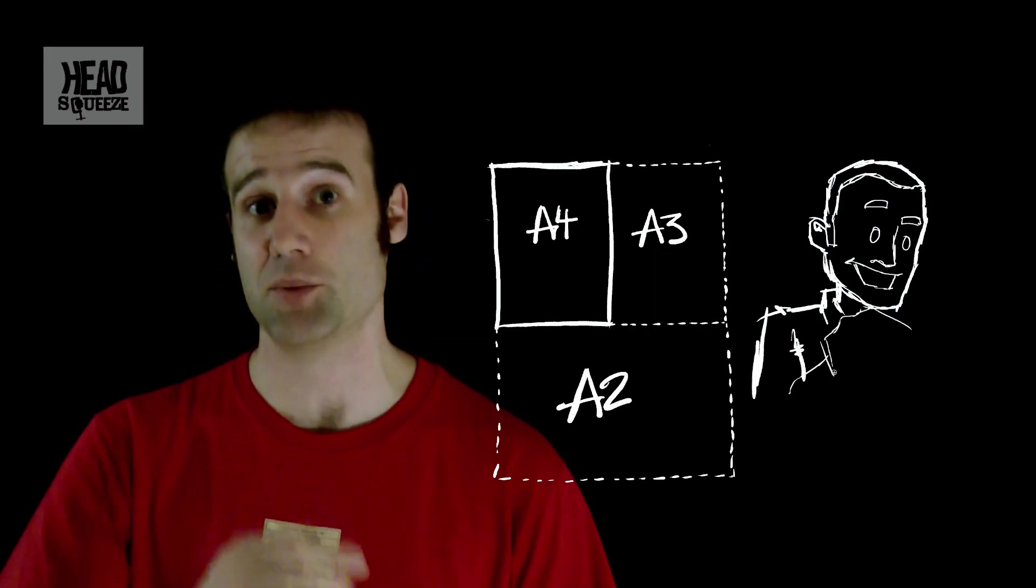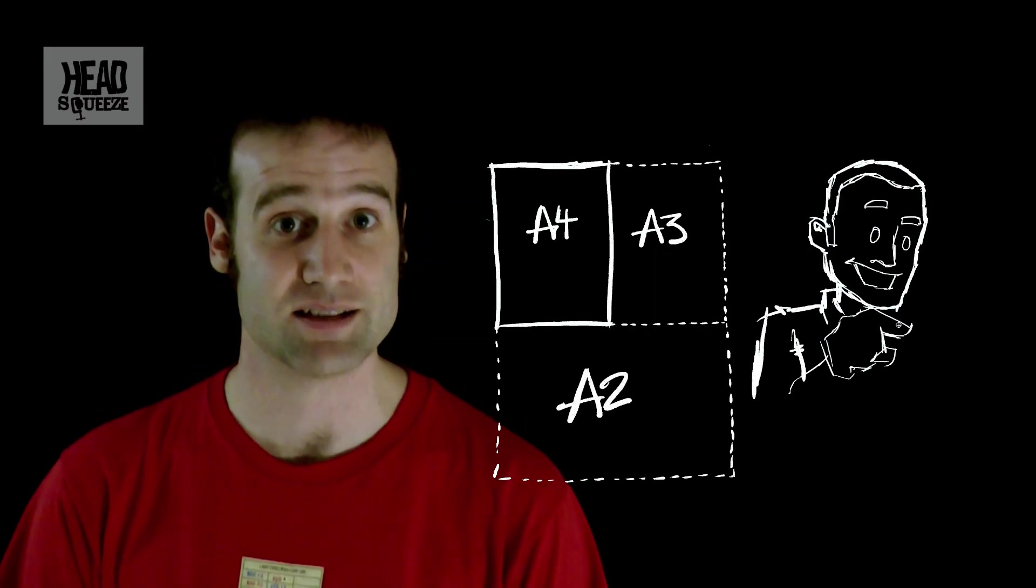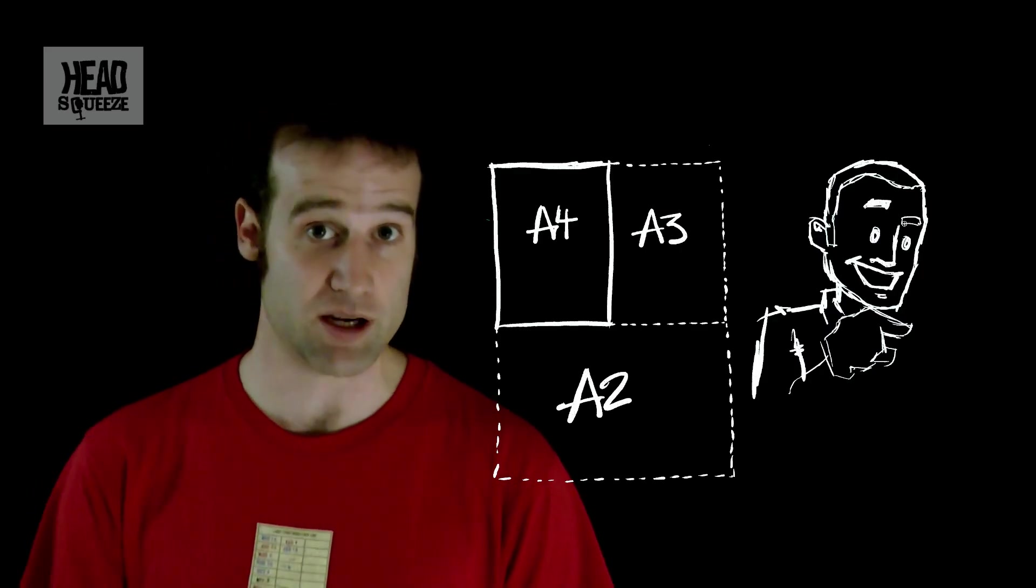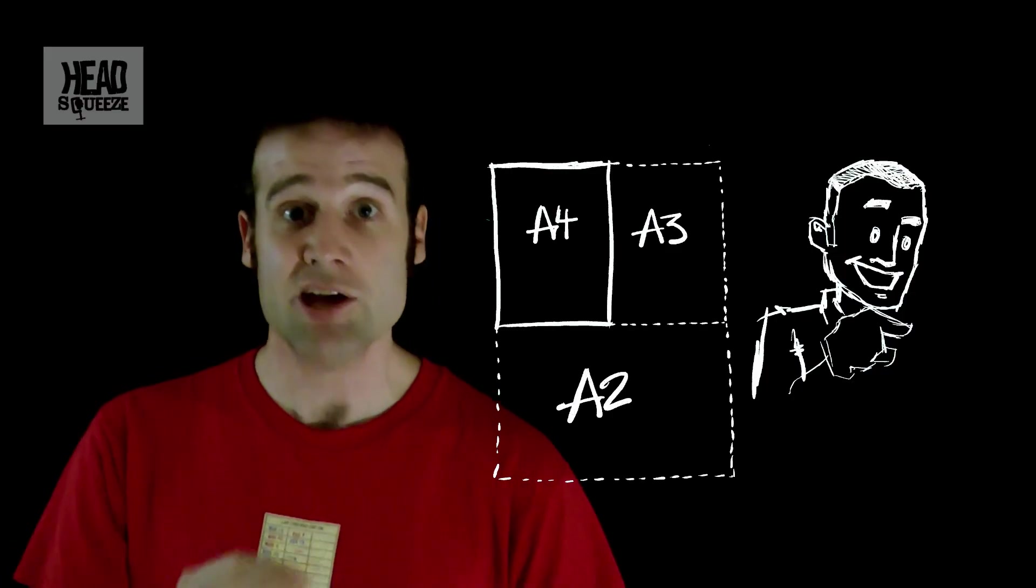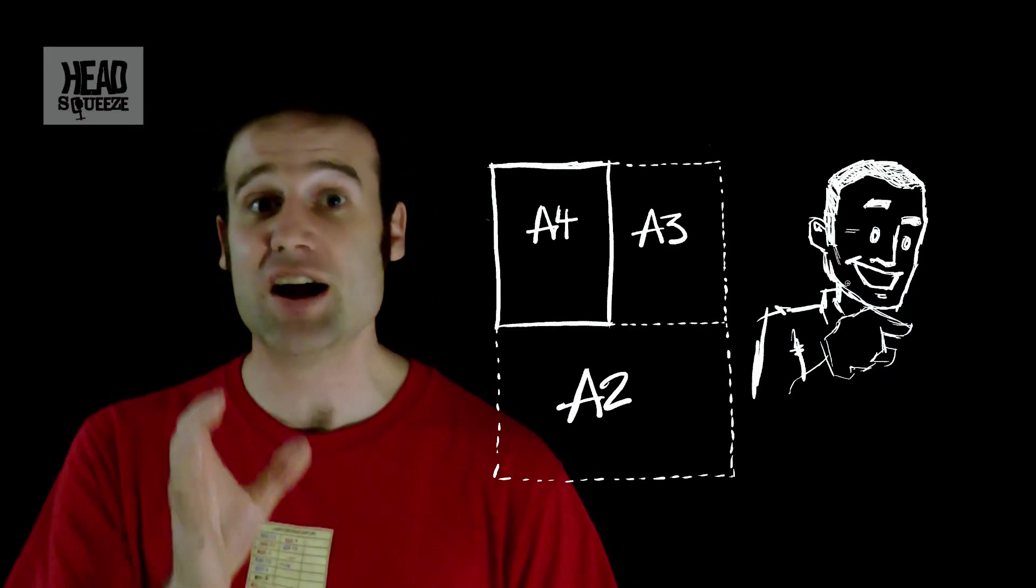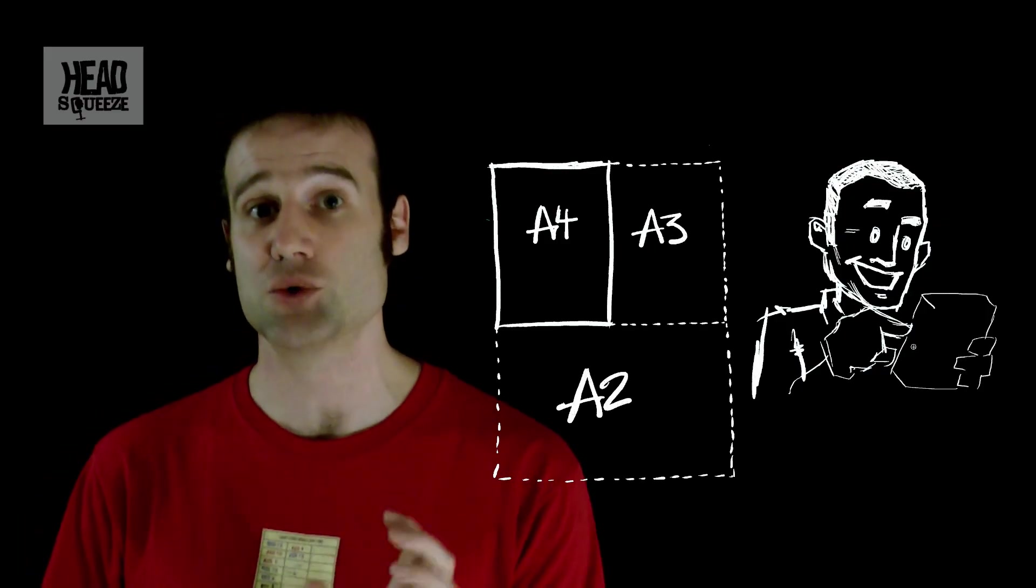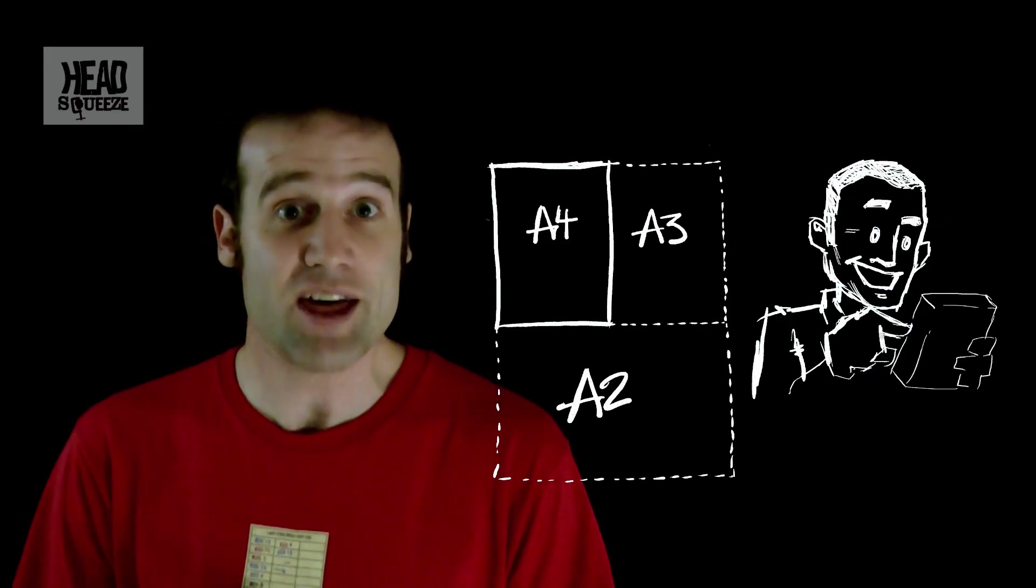The only reason it is the square root of 2, is because we wanted to keep the other property that the A4 paper scale has. The fact that if you cut any piece of A paper in half, you get 2 of the size below it. Or if you put any 2 together, you get the next size up. That very useful property only exists if you use exactly the square root of 2 for your paper sizes. And that's why we do that.